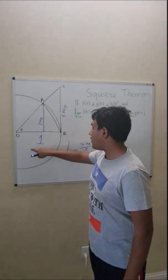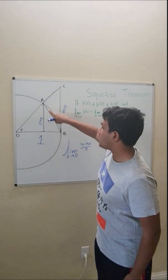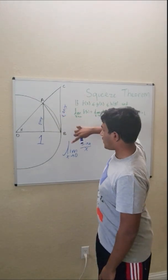So, we know that if this is a unit circle, then this line must be equal to sine of x, this line must be equal to tangent of x.